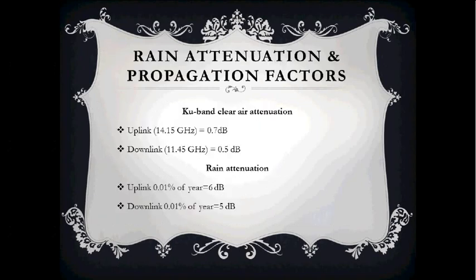For rain attenuation and propagation factors: for uplink at 14.5 GHz in clear air, the KU band has 0.7 dB rain attenuation, and for downlink in clear air it is 0.5 dB. For a rain rate of 0.1% of the year, uplink rain attenuation is 6 dB and downlink rain attenuation is 5 dB.